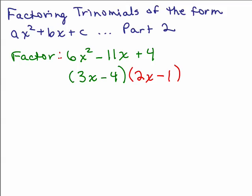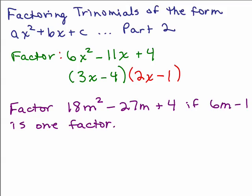So, wouldn't it be nice if you were always given at least one of the correct terms? So, let's see if you could do this one. Factor 18m squared minus 27m plus 4 if you know 6m minus 1 is one factor. So, try this. You know 6m minus 1 is one of the factors. So, what would the other factor be?